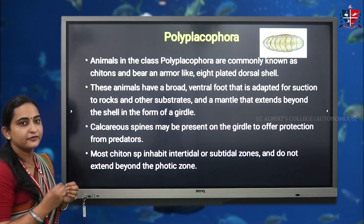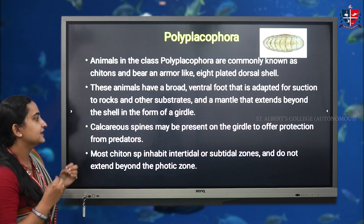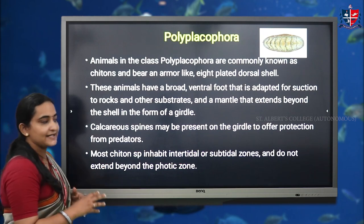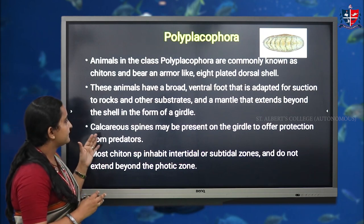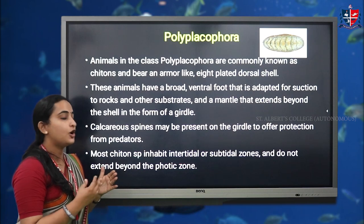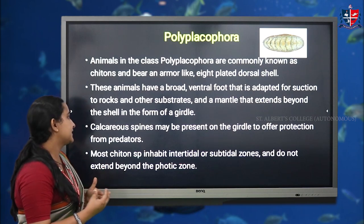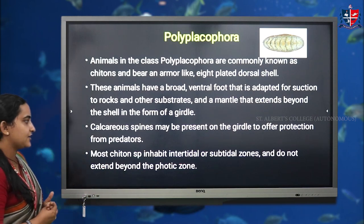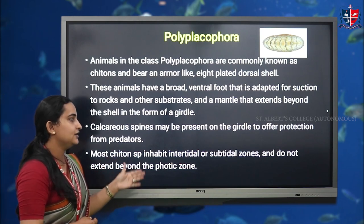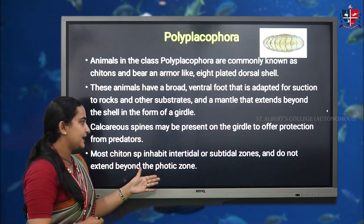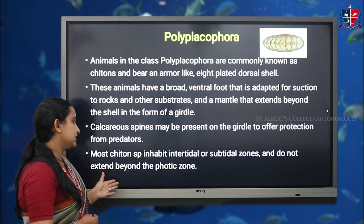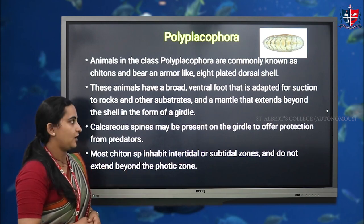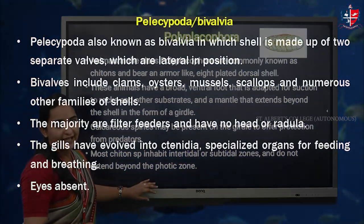The mantle extends beyond the shell in the form of a girdle, and on the girdle, calcareous spines are present. The main function of these calcareous spines is to offer protection from predators. Most chiton species inhabit intertidal and subtidal areas but do not extend beyond the photic zone. The example is chitons.